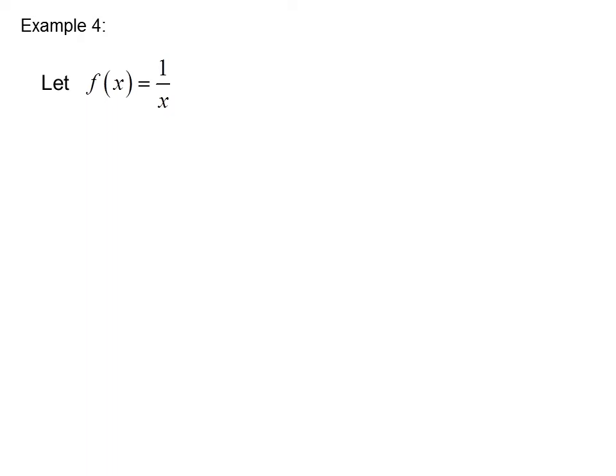Example 4: Let f(x) equal 1 over x. Find the slope at x equals a. So m equals the limit as h goes to 0 of f(a plus h) minus f(a) over h.